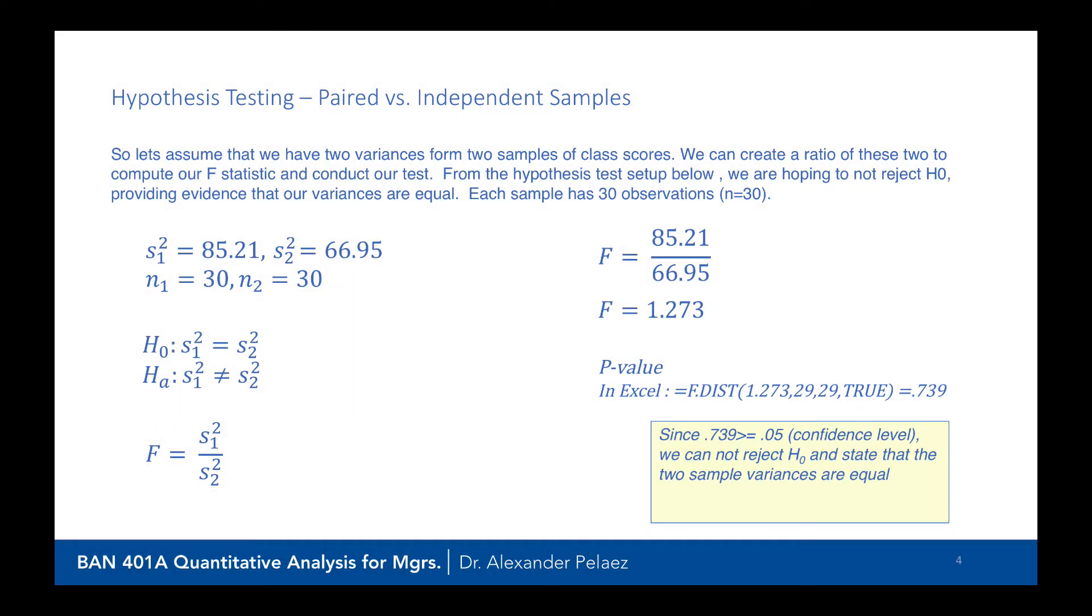So here's an example. Let's assume that we have two variances from the two sample scores that we had before. We can create a ratio of the two to compute our F-statistic and then conduct our test. On the left, we have our variance from sample one is 85.21 and our variance from sample two is 66.95. Both observations are 30. Both sets of observations are 30.